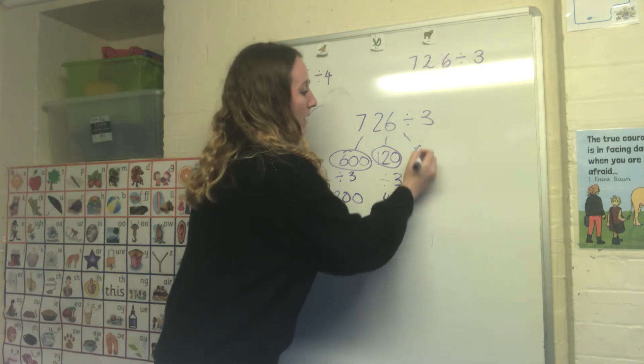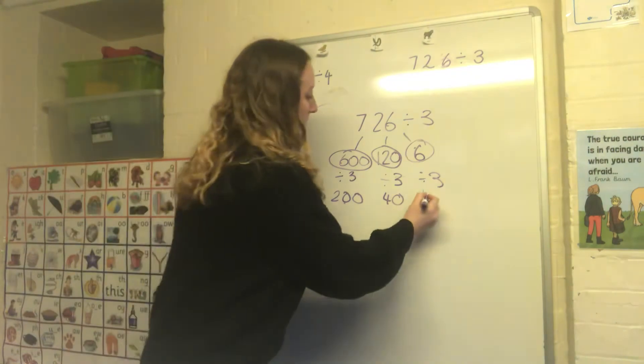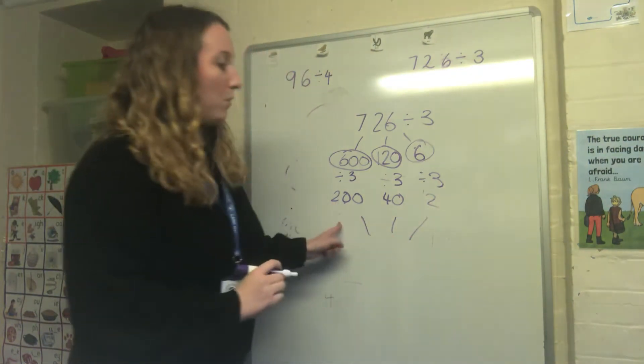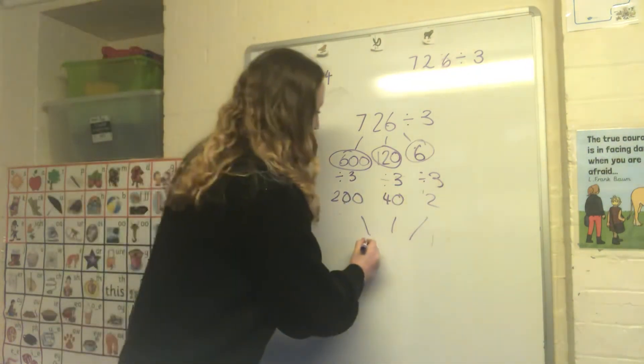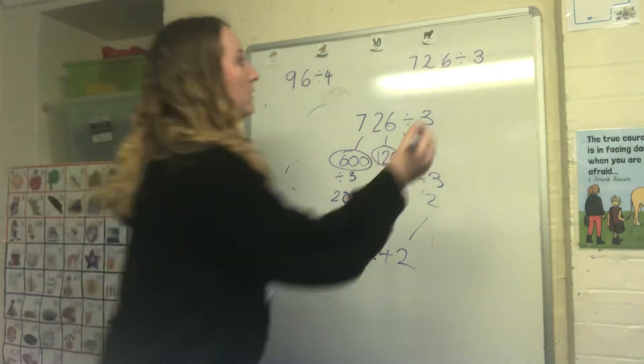And 6 divided by 3 we know. 6 divided by 3 is 2. Now I can put my numbers back together. So 200 add 40 add 2. So my answer is 242.